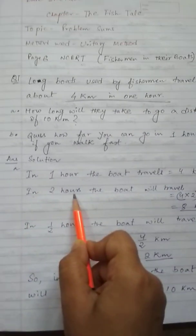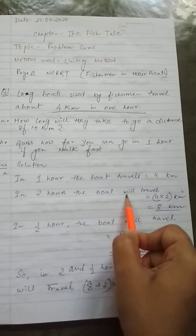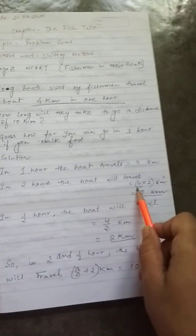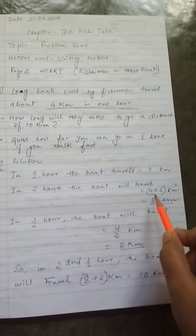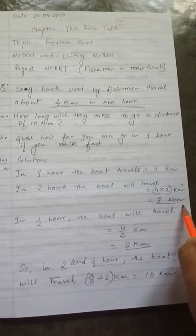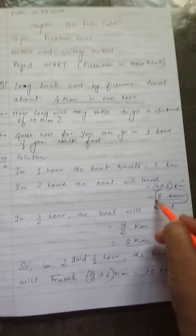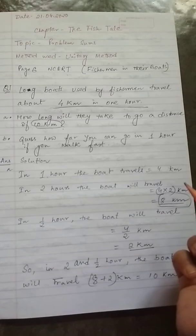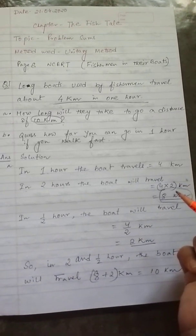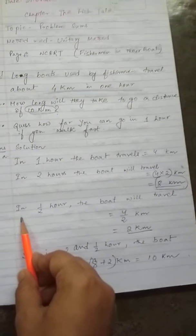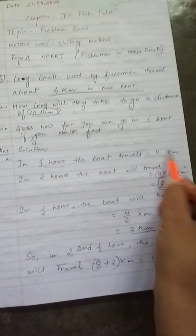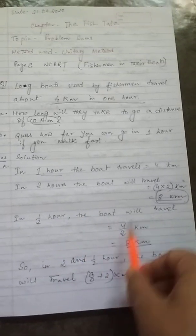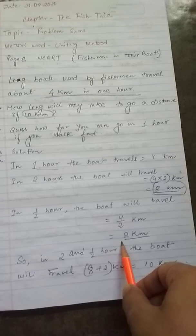Now in 2 hours the boat will travel how much? If in 1 hour it is 4 km, then in 2 hours it must travel 4 into 2, that is 8 km. Now this much is done. As the question asks about 10 km, still 2 km has to be calculated. So let's calculate for half hour. If 1 hour it travels 4 km, obviously in half hour it will travel 4 by 2 km, that is 2 km.